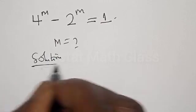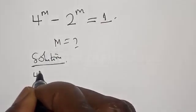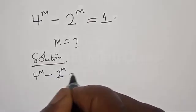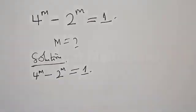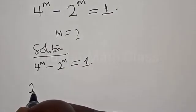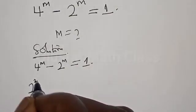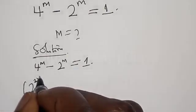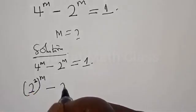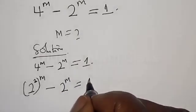Solution. We have 4 raised to power m minus 2 raised to power m equal to 1. Then 4 raised to power m can be expressed as 2 raised to power 2m, minus 2 raised to power m, equal to 1.